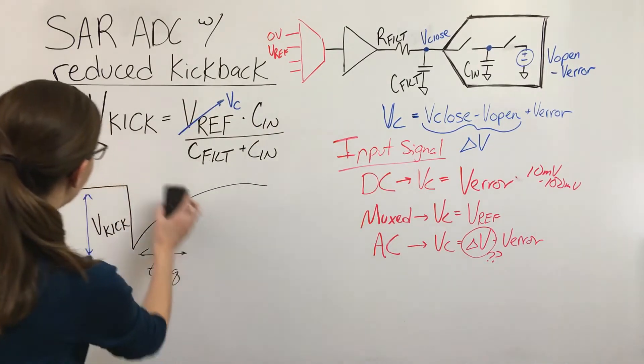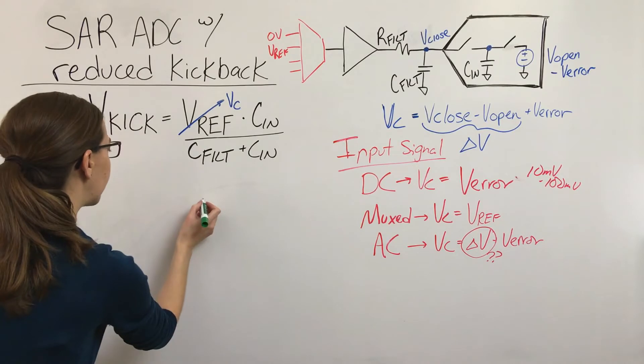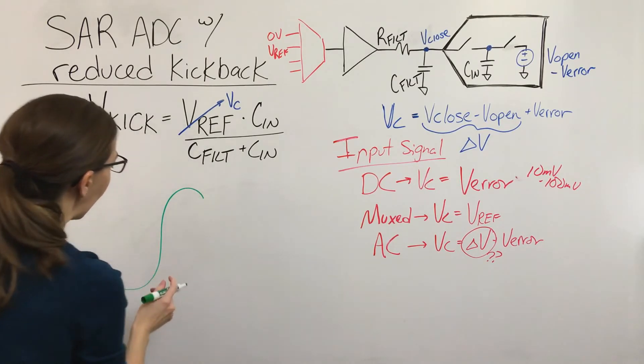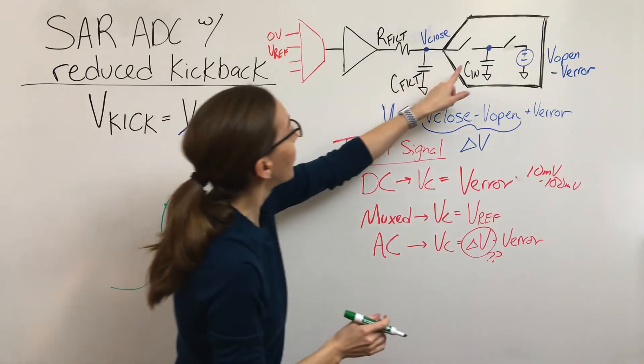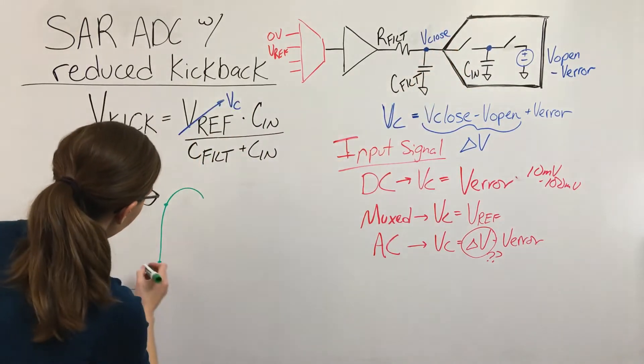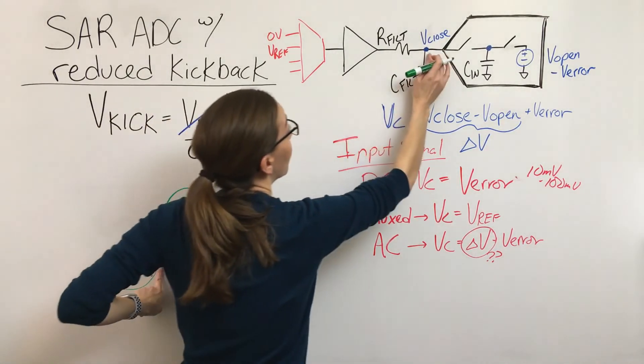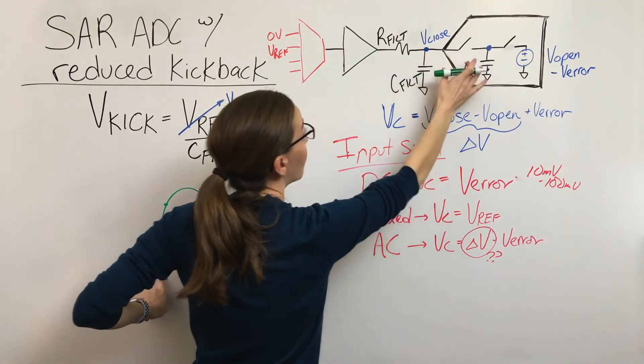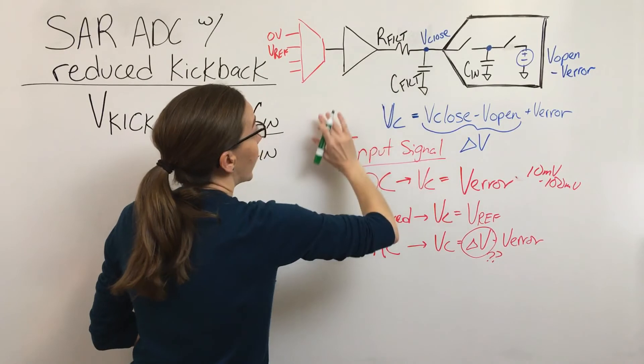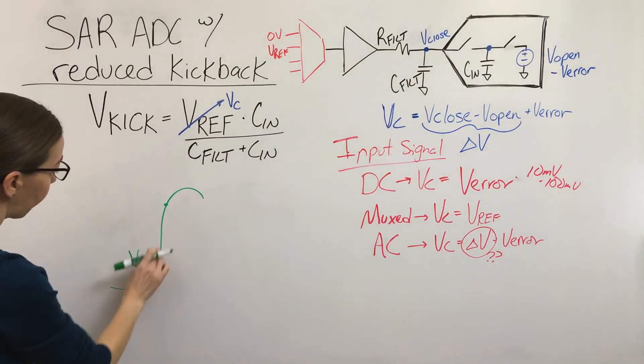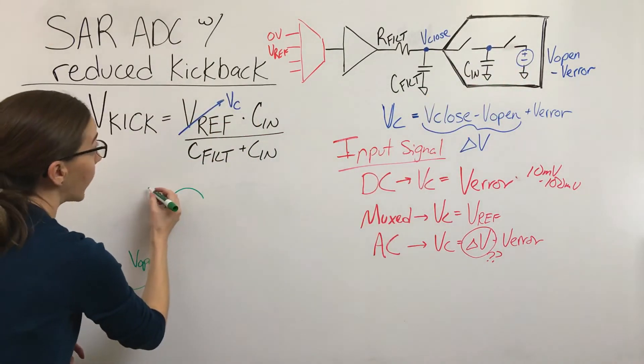And so how we do that is we think about our AC signal as a sine wave. And what we want to know is how much is this sine wave changing from the time when the switch opens to the time when it closes. So when the switch opens, the voltage on both nodes at the point before it opens will be equal. We're going to call it V open. And then when the switch closes again, this node right here is going to have moved on. It's going to be further along in the sinusoid and this node is going to have this V open minus V error on it. And that's what's going to cause that kickback.